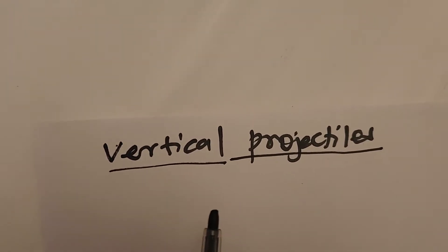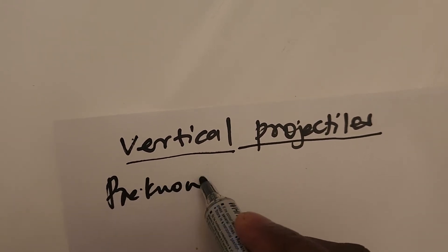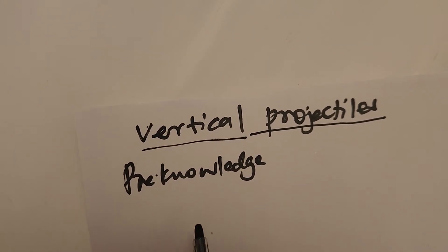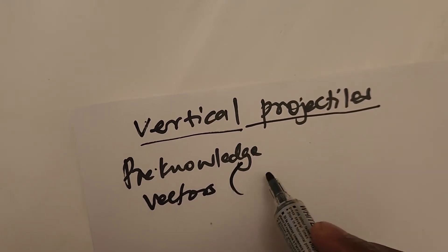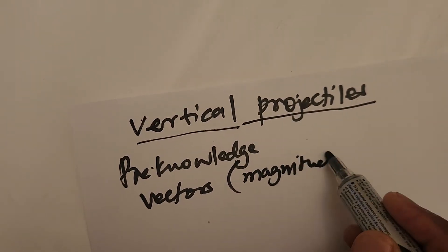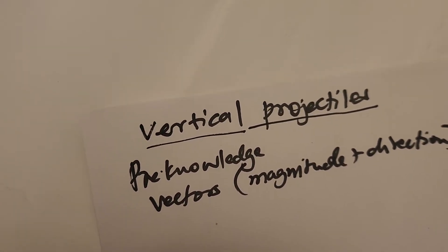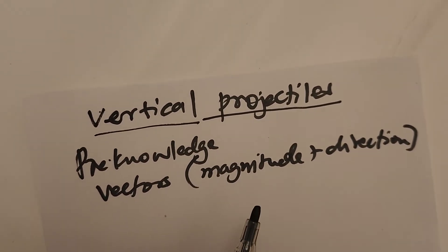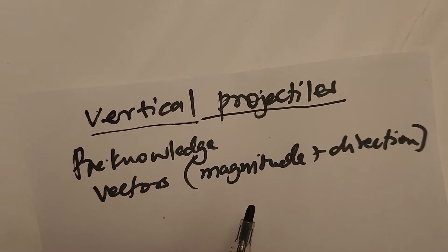We need our pre-knowledge — what we learned in the previous grades — because we should not build from a vacuum. In grade 10 and 11 you learned about vectors: vectors are physical quantities with magnitude and direction. We also learned about the reference point, meaning that any time when you want to describe motion you must have a reference point, your starting point and the final point.